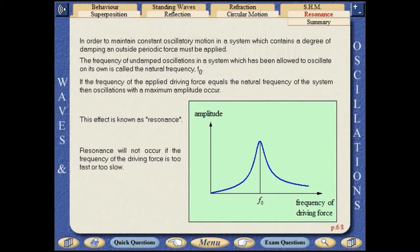The frequency of undamped oscillations in a system which has been allowed to oscillate on its own is called the natural frequency. If the frequency of the applied driving force equals the natural frequency of the system, then oscillations with a maximum amplitude occur. This effect is known as resonance.